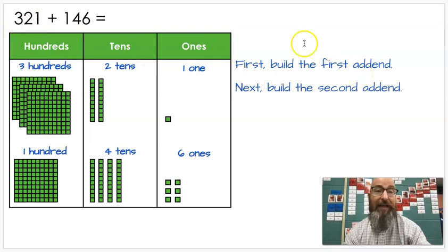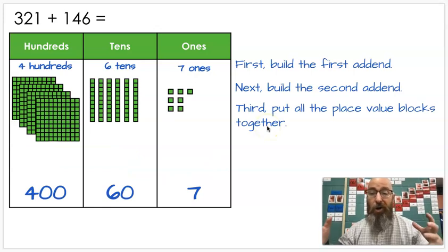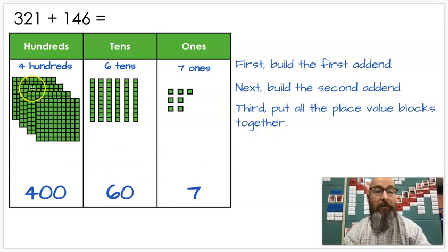Next, you're going to build a second addend, and we had 146. So you have 100, four tens for 40, and six ones for 6. Third, you're going to put all those place value blocks together, or base 10 blocks together. So I took them all and I pushed them together. So now I have four hundreds, which makes 400. I have six tens, that makes 60. And I had seven ones, that makes seven.